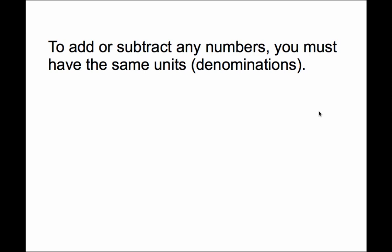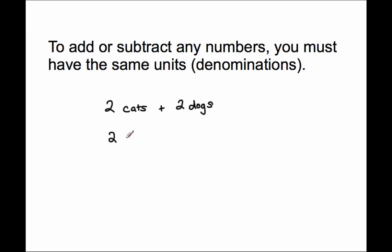To add or subtract any numbers, you must have the same units or denominations. For example, if I have two cats and I try to add them with two dogs, I cannot say I have 4 cats or 4 dogs. But if I change how I'm naming each animal and say I have 2 animals — because cats are animals and dogs are animals — now I can add them together because they have the same unit.